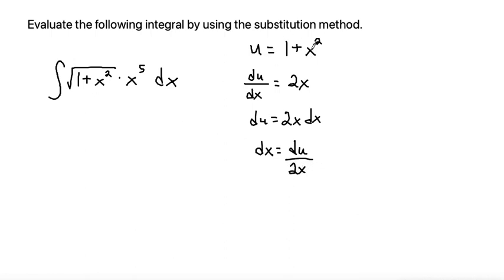So now I'm going to take my u and my dx and I'm going to substitute it into my integral. That makes the integral the square root of u times x to the fifth times du over 2x. So now we want to see what we can cancel out. We have a 2 in the denominator, so we can pull that out to the front to make 1 half integral of the square root of u. Now we have an x to the fifth on top and an x on bottom, so that x will cancel out making x to the fourth and then du.